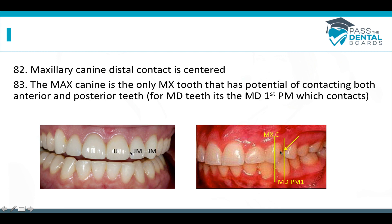The maxillary canine is the only maxillary tooth that has the potential of contacting both the anterior and the posterior teeth — this is a question they love to ask on the boards. For the mandibular teeth, it's the mandibular first premolar which contacts anterior and posterior teeth. So the maxillary canine is touching the canine and the premolar, and the premolar is touching the canine and the premolar.